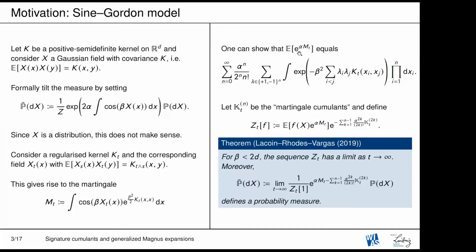Here beta squared is the inverse temperature and alpha is a coupling constant. The problem is that if beta is too big, when you take the limit t goes to infinity this doesn't converge, because you would be constructing a measure that doesn't exist. So you need to reweight again your measure by using cumulants — this is sort of the same formula shown above, and it represents a kind of weak renormalization.